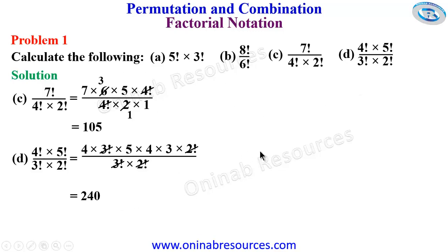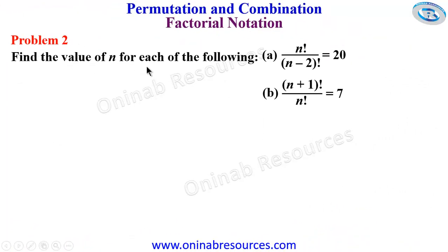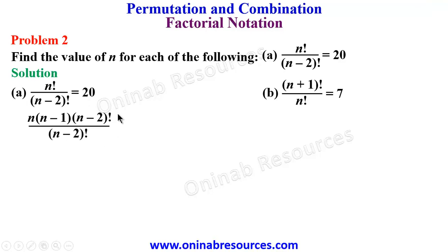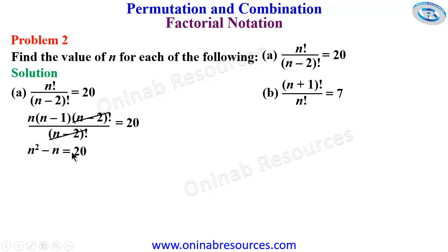That's the end of Problem 1. For Problem 2, find the value of n: a) n factorial over n minus 2 factorial equals 20; b) n plus 1 factorial over n factorial equals 7. For part a, we expand n factorial down to n minus 2 factorial: n times n minus 1 times n minus 2 factorial, divided by n minus 2 factorial equals 20. The n minus 2 factorials cancel, leaving n times n minus 1, which expands to n squared minus n equals 20. Rearranging to standard quadratic form: n squared minus n minus 20 equals 0.